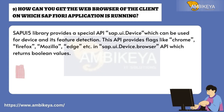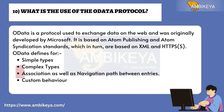Question number nine: How can you get the web browser of the client on which a SAP Fiori application is running? The SAP UI5 library provides a special API, sap.ui.Device, which can be used for device and feature detection. This API provides flags like Chrome, Firefox, Mozilla, and Edge in the sap.ui.Device.browser API, which returns boolean values.